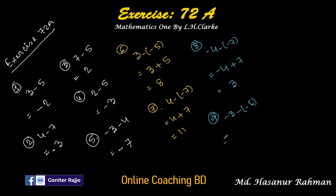Number nine: minus 3 minus minus 6. Minus into minus is plus, so minus 3 plus 6. The sign of the larger number is positive, so we do the subtraction and put the positive sign. The answer is positive 3.